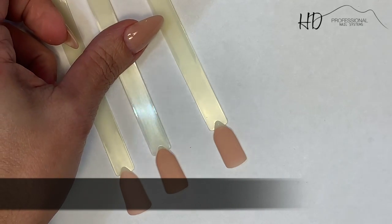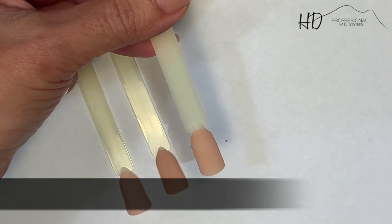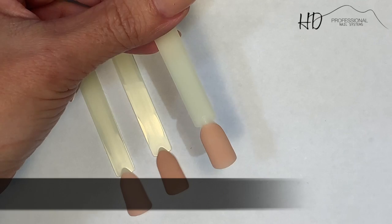And then our third one, which is our new addition to our camouflage range, is Rosy Peach. And this is in between the other two, so it's a pinky peach color.